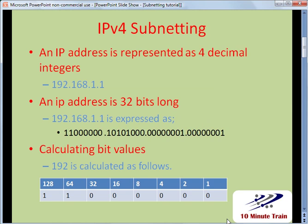As far as IP version 4 subnetting goes, an IP address is represented as 4 decimal integers. So a typical IP address you would see is 192.168.1.1, real common on a home router. IP addresses are really 32 bits long — this is a decimal number converted from binary. So 192.168.1.1 in binary is expressed as 8 bits dot 8 bits dot 8 bits dot 8 bits, for a total of 32 bits.